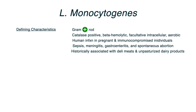Human infection usually occurs in pregnant patients, and on your board exams, the patient in the vignette will likely be pregnant. But it can also occur in immunocompromised individuals. The clinical disease it causes is usually one of the following: sepsis, neonatal meningitis, gastroenteritis, or in the case of a pregnant patient, spontaneous abortion.